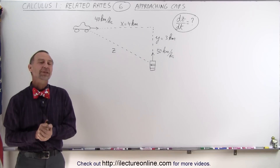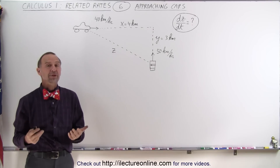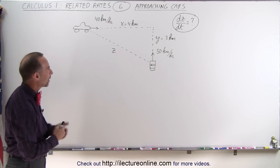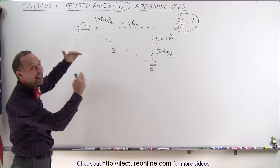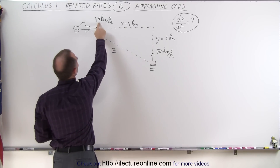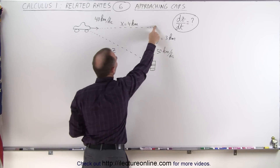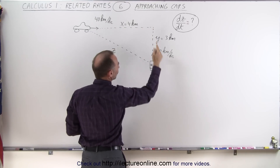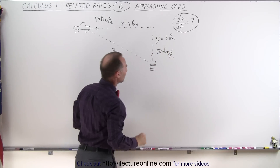Welcome to White Lake Turnline. Here's a fairly classical example of how to use a related rates type of problem. We have two cars that are approaching the same point. This car traveling at 40 kilometers per hour is 4 kilometers away from this point. This car traveling northward at 50 kilometers per hour is 3 kilometers away from this point.